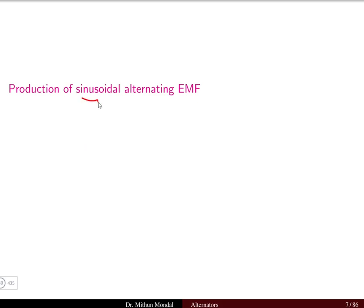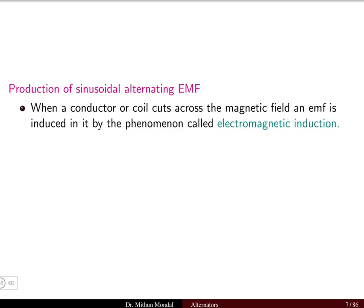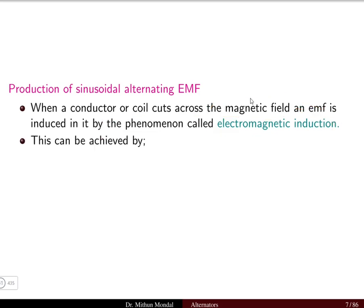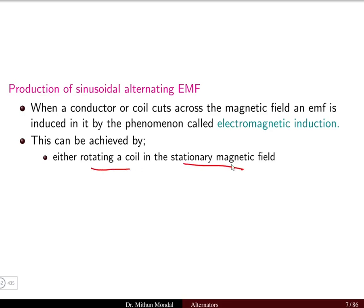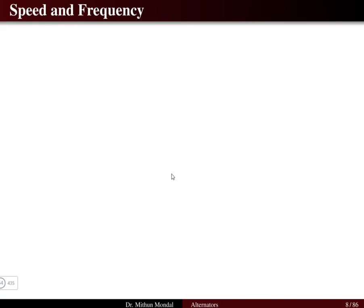A sinusoidal alternating EMF is produced in the generating action due to the principle of electromagnetic induction. This can be achieved either by rotating a coil in a stationary magnetic field or by keeping the coil stationary and rotating the magnetic field. Both methods produce a sinusoidal alternating EMF.